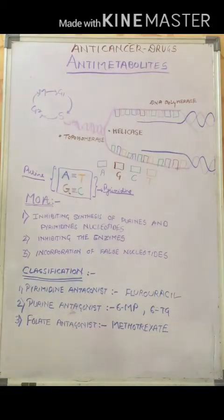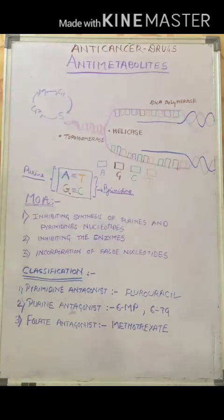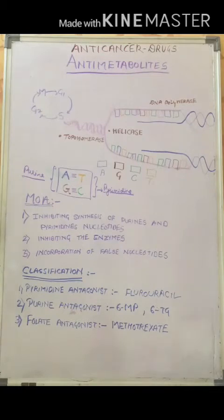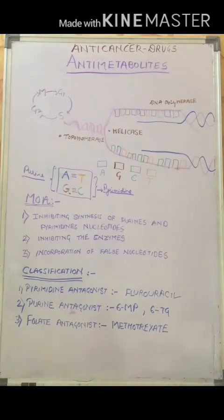Hello everyone, today we are going to study anti-metabolites, the next class of anti-cancer drugs. Anti-metabolites work by inhibiting the synthesis of purines and pyrimidine nucleotides. They also inhibit the enzymes required for DNA synthesis and may incorporate false nucleotides, stopping replication so that the cell may die.